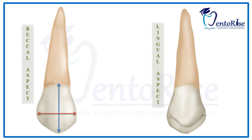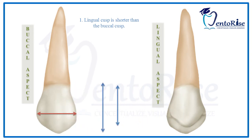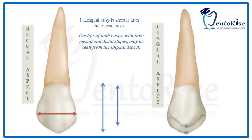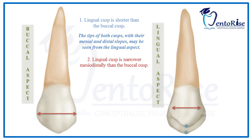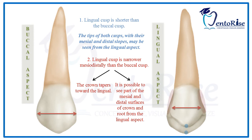The lingual cusp in a permanent maxillary first premolar is shorter in length than the buccal cusp, making it possible to see the tips of both cusps from the lingual aspect. This contrasts with the permanent maxillary second premolar, where the buccal and lingual cusps are equal in length. Additionally, in the permanent maxillary first premolar, the lingual cusp is narrower mesiodistally than the buccal cusp, meaning the crown tapers toward the lingual side. This makes it possible to see part of the mesial and distal surfaces of the crown and root from the lingual aspect.